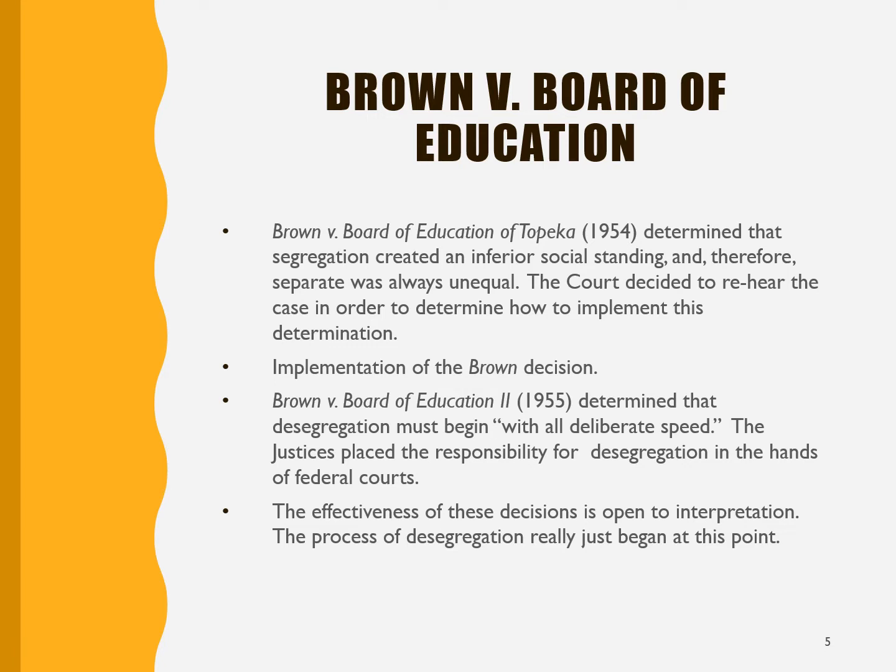When they reheard the case to see how they would implement Brown, they decided that Brown would be implemented by the lower federal courts primarily. They said desegregation should begin with all deliberate speed. Now, deliberate speed is kind of an oxymoron — it's saying not incredibly quick, but as quickly as it can be reasoned out and implemented.